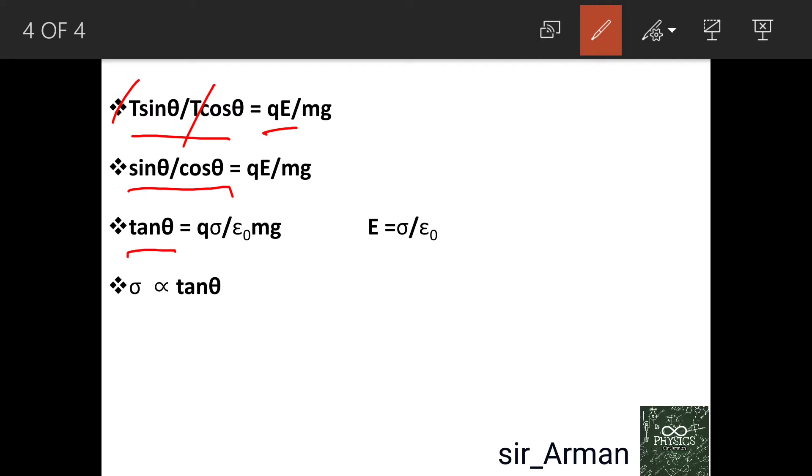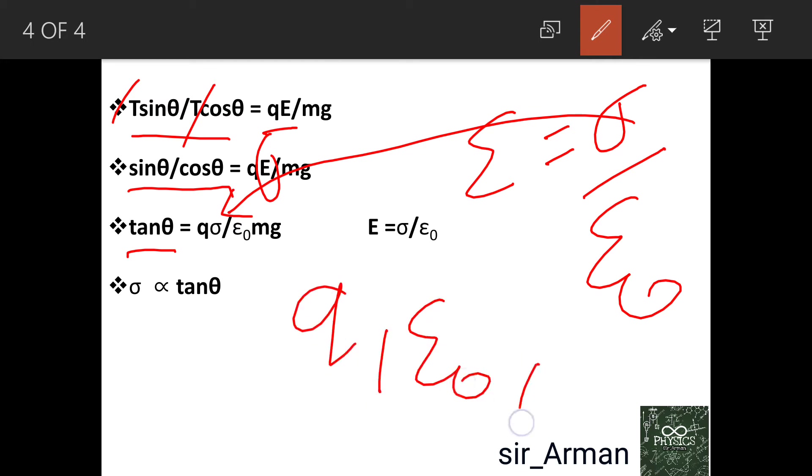From Gauss's law, we can obtain E (electric field) equals sigma by epsilon naught, where sigma is the surface charge density. So in our equation qE, we substitute E with sigma by epsilon naught. Here, q is constant, epsilon naught is constant, mass is constant, and gravitational acceleration is also constant.